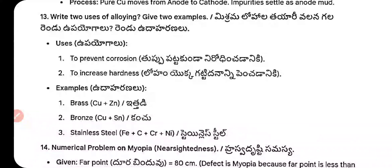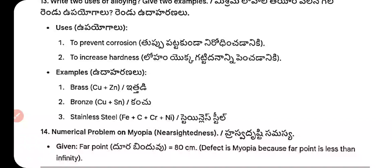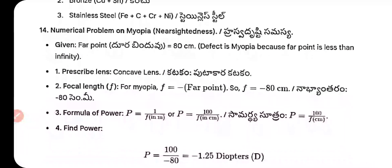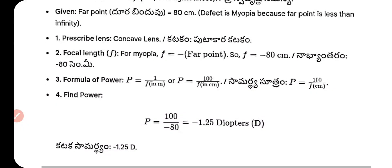Uses of alloying: to prevent corrosion, to increase hardness. Examples of alloys: brass (copper + zinc), bronze (copper + tin), stainless steel (iron + carbon + chromium + nickel).